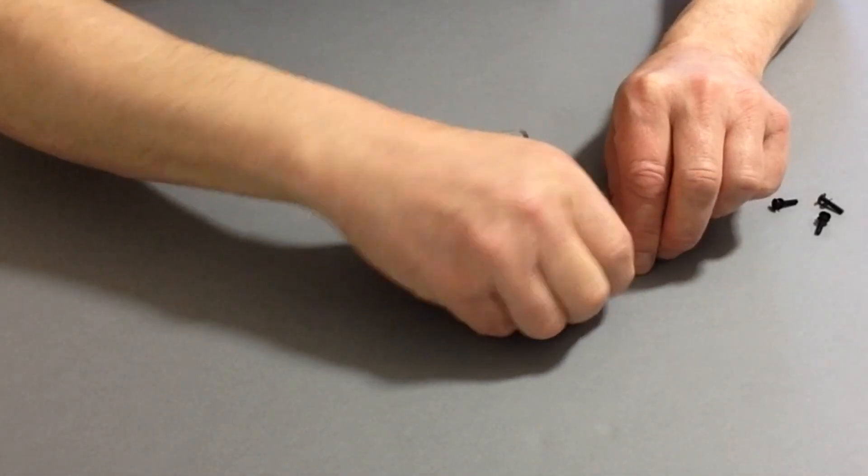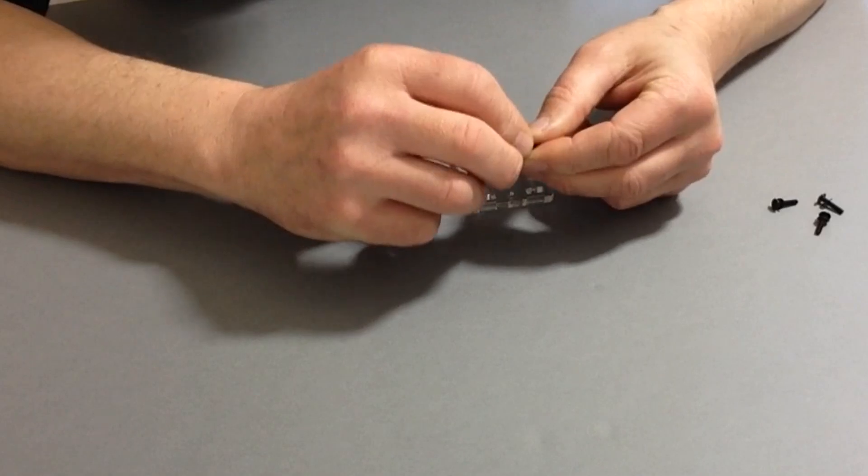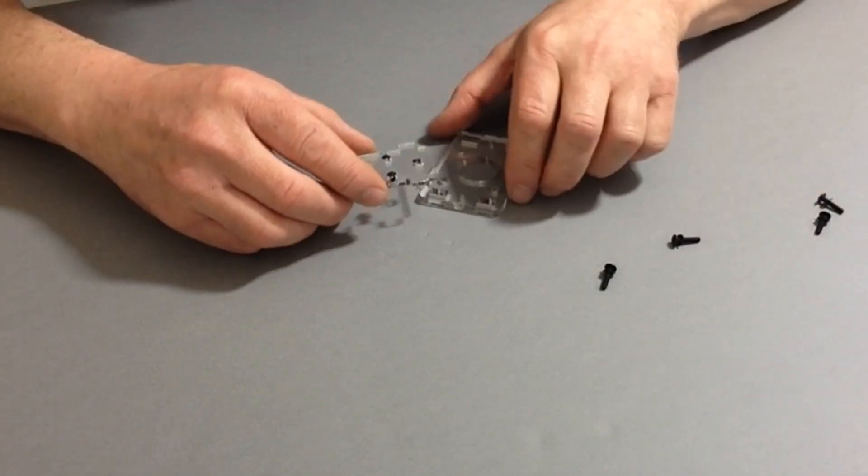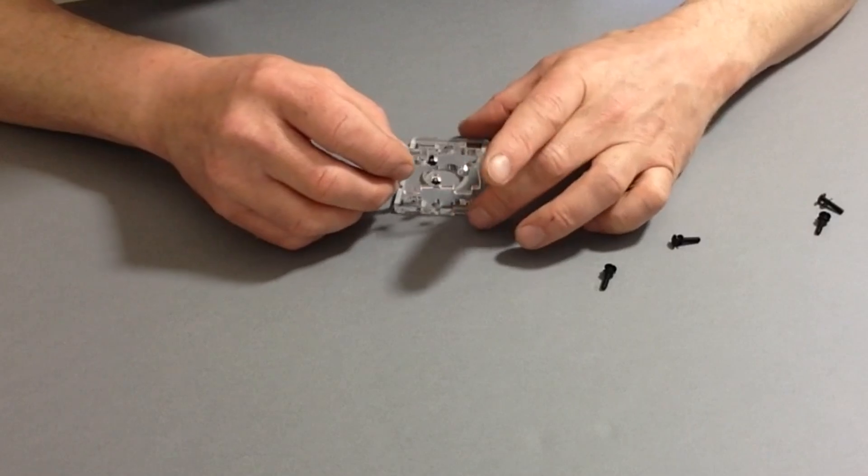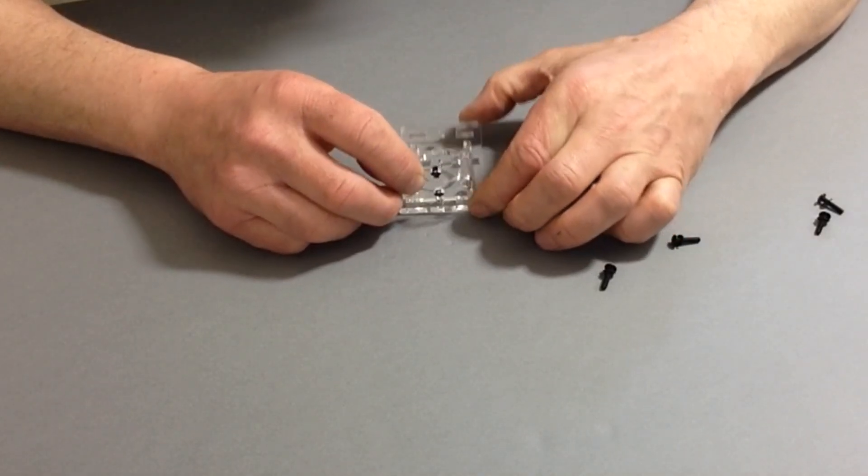Once you've done that, let's get the M3 screw and one of the washers. Do that for all four of those, and then the parts that we've just done, place the tops over there like so.